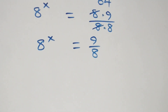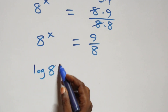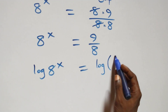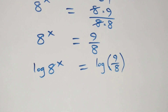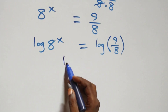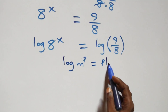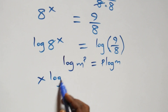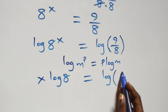The next step, we take the log on both sides. We have log of 8 raised to power x equals log of 9 over 8. We apply the power rule of logarithms: log of m raised to power p is the same thing as p times log m.